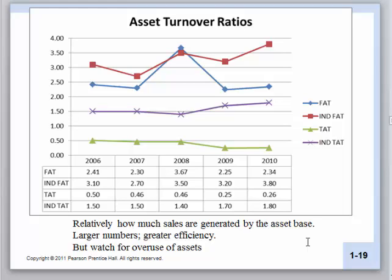We would like these numbers to be larger, but we have to watch about them being too big — we don't want numbers so large that we're overusing and beating up our equipment. The industry is more efficient than Coors, which shows lower amounts of fixed asset efficiency. Coors also has lower numbers with respect to total assets. What we would say is there's a possibility that maybe we have too many assets — the asset base may be too big given the business we're in and our current sales level.